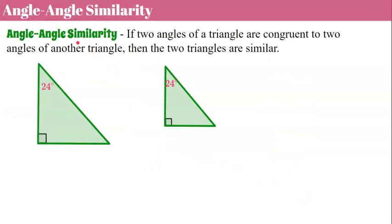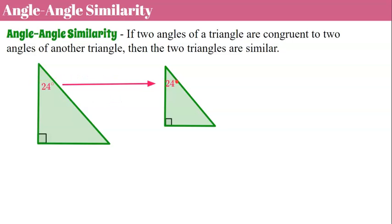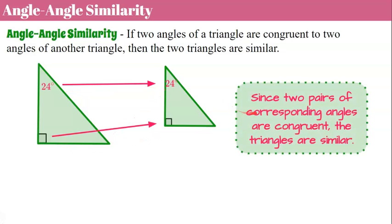Now let's learn about angle-angle similarity. If two angles of a triangle are congruent to two angles of another triangle, then the two triangles are similar. We use this rule because we know the missing third angle must also be the same, since all three angles in a triangle add up to 180. So as soon as you can prove two corresponding angles are congruent, you know the triangles are similar to each other.